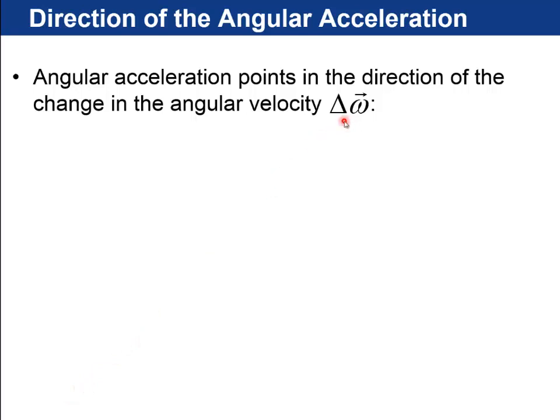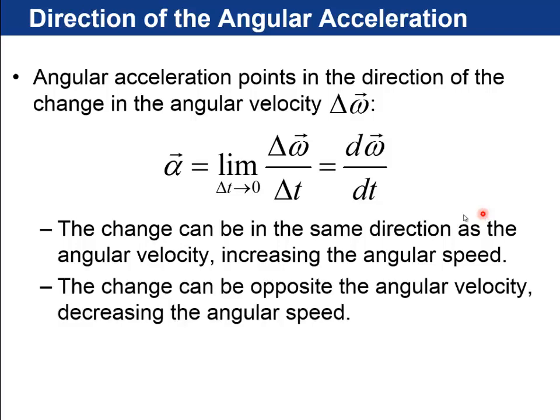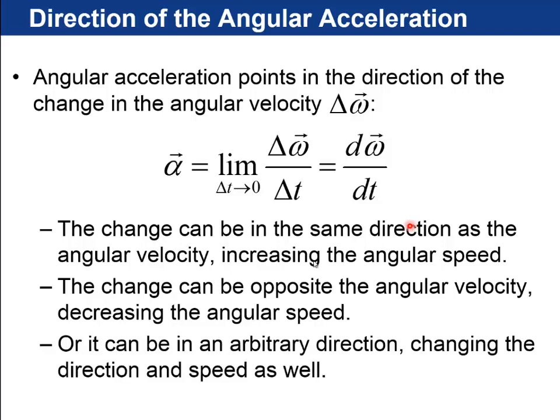Okay, so now we have a vector version of omega. We can have a vector version of the time derivative of omega, which was alpha. So alpha being the limit, as delta t goes to zero, of delta omega over delta t, that's the time derivative of this omega vector. So now angular acceleration has a vector. If the alpha and omega are in the same direction, that means the thing's getting faster and faster. If the alpha vector is opposite the direction of omega, that means that it's slowing down. Or it could be in arbitrary direction, which would actually change the direction of the rotation axis.